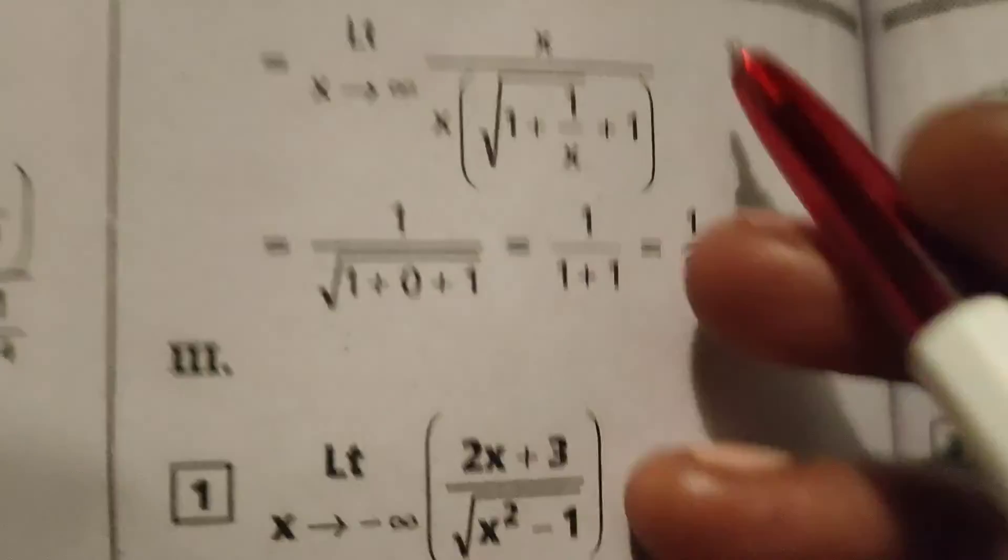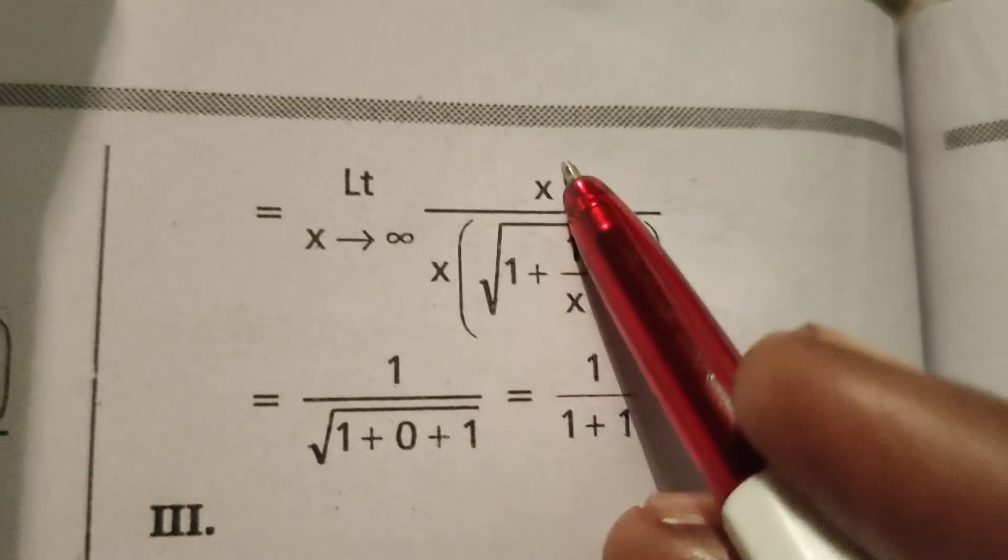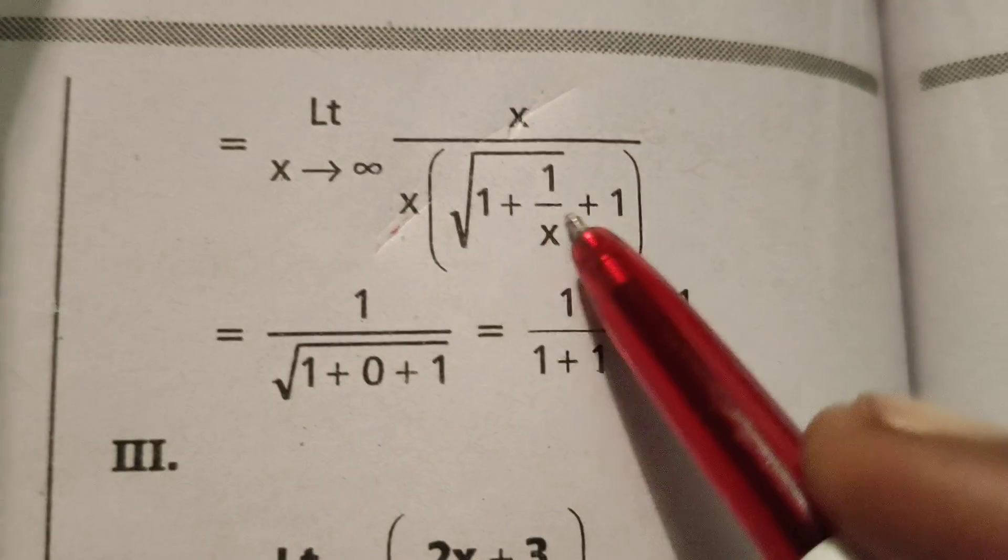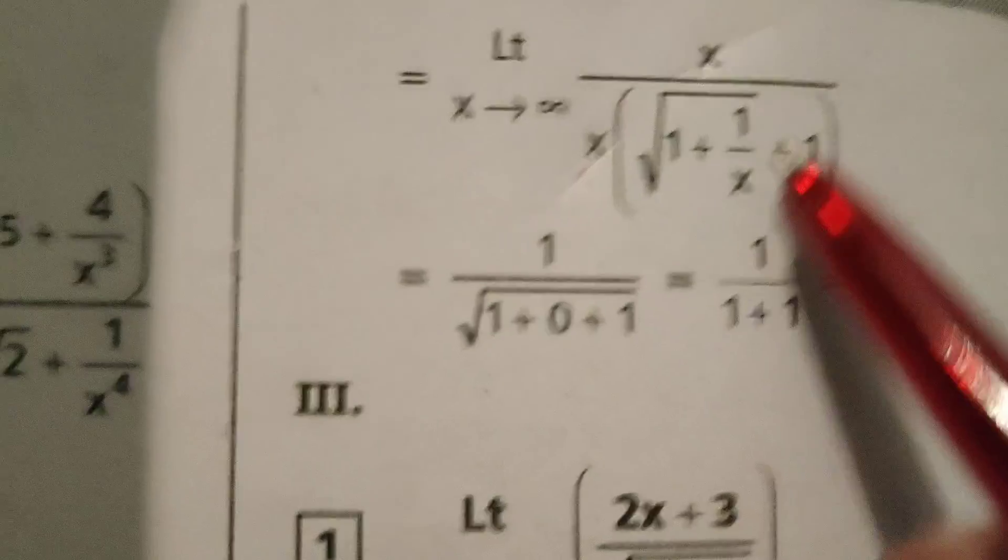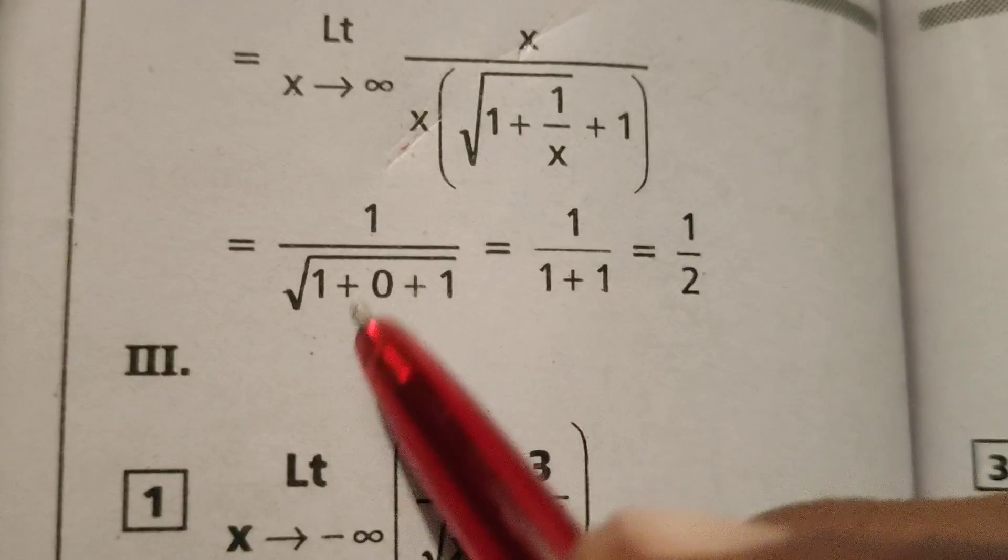Now here limit x tends to infinity. Numerator x, denominator x gets cancelled. Here substitute infinity. 1 by infinity means 0, 1 plus 0 plus 1 equals 2.